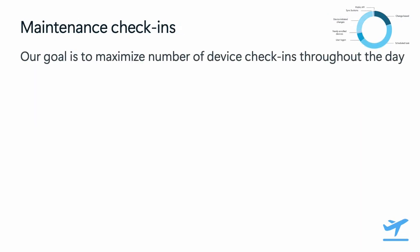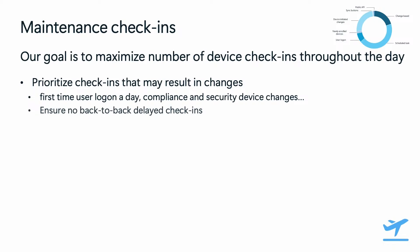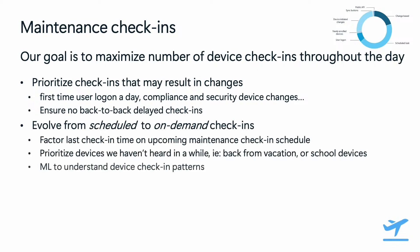On maintenance check-ins, our goal is to maximize the number of successful check-ins throughout the day. That means within the maintenance category, we'll do fine-grained prioritization on those check-ins that are more likely to result in changes to devices — like first-time user logon every day or check-ins triggered by security or compliance changes detected on the device. Second is getting smarter about those scheduled check-ins, moving away from the concept of a fixed schedule and more towards on-demand, factoring in device usage patterns to time those check-ins better.